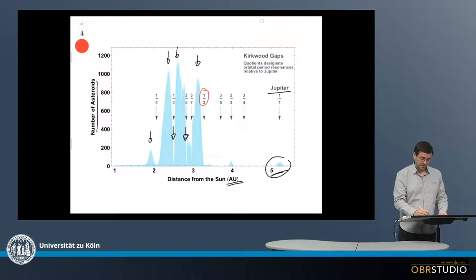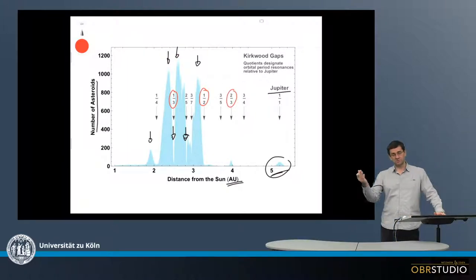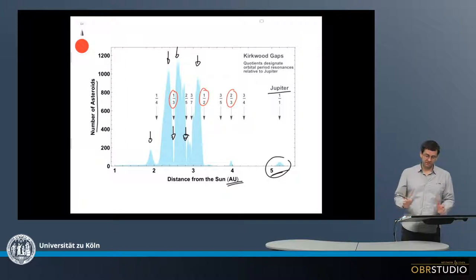You can see there are a number of other resonances like 1 to 3, so Jupiter orbits once and the asteroid 3 times, or sometimes also something like 2 to 3, so Jupiter 2 times, asteroid 3 times and so on.